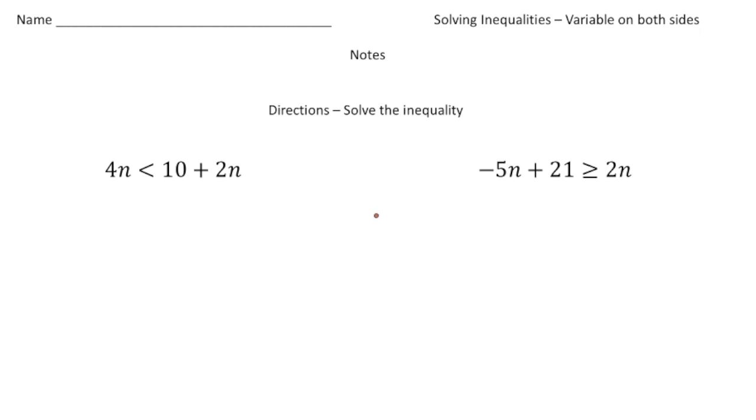Let's take a look at this first problem. We have 4n is less than 10 plus 2n, right? So notice we have an n on both sides of the inequality. This might be a little bit different than what you've done before, but the process is actually pretty easy to solve this.